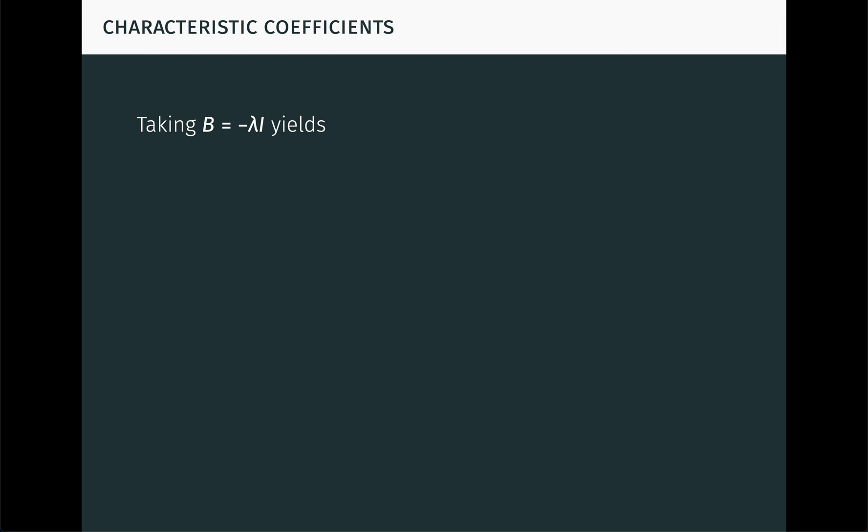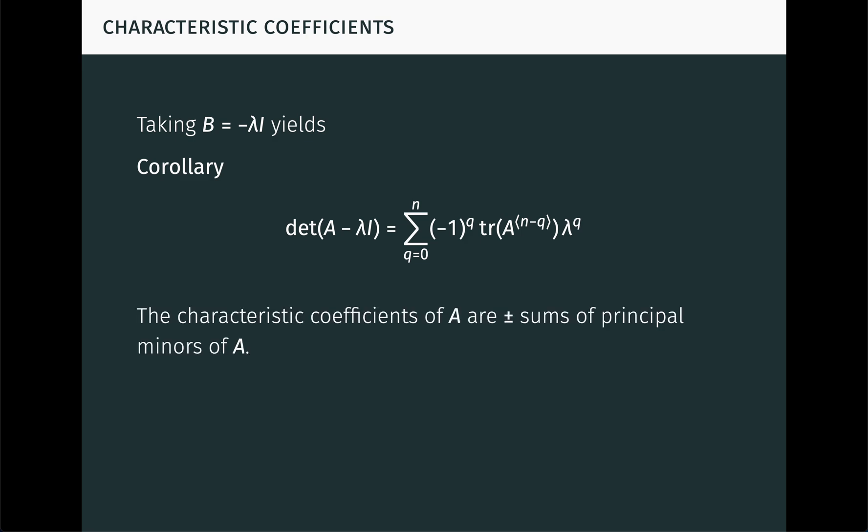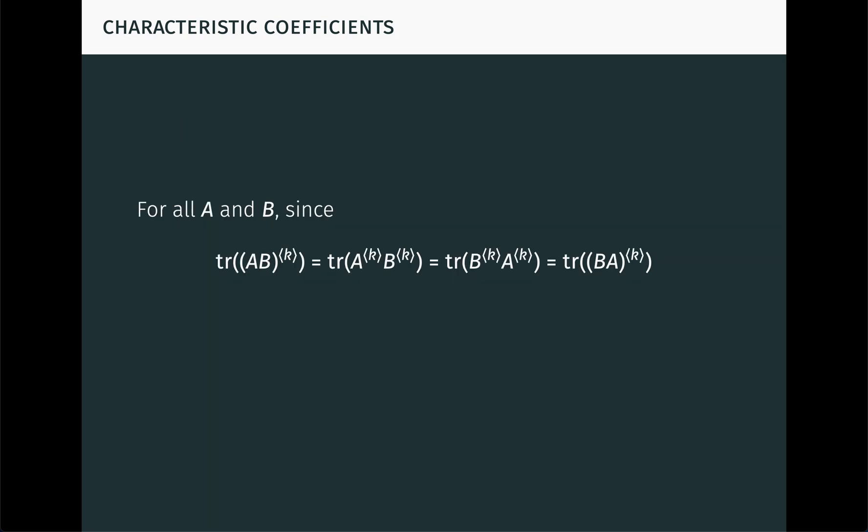Now, if we take B equal to -λI in this formula, where I is the identity matrix, we obtain a formula for the characteristic polynomial of A. This formula tells us that the characteristic coefficients of A are, up to sign, just sums of the principal minors of A, that is, minors whose row and column indices are equal. In particular, the constant coefficient is just the determinant of A. And the second leading coefficient is, up to sign, just the trace of A. For any matrices A and B, since the trace of AB^⟨k⟩ is easily seen to be equal to the trace of BA^⟨k⟩, it follows that the products AB and BA have the same characteristic polynomial. So we see that the box product helps us get great insight into characteristic polynomials, which are extremely important in linear algebra.